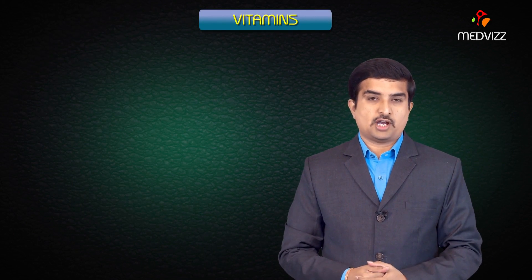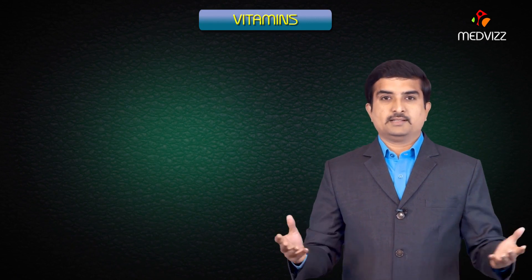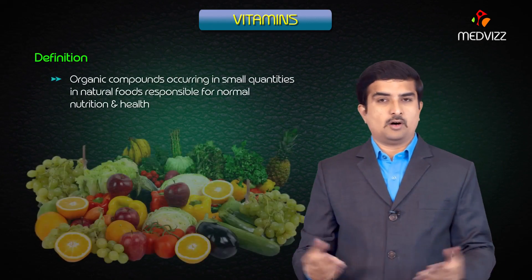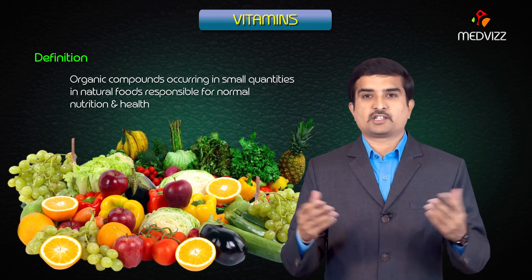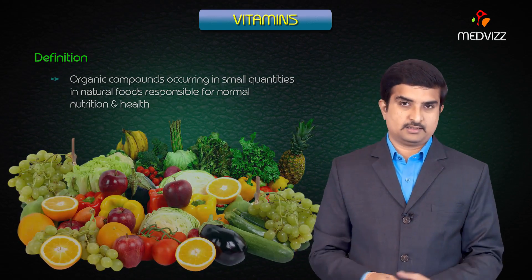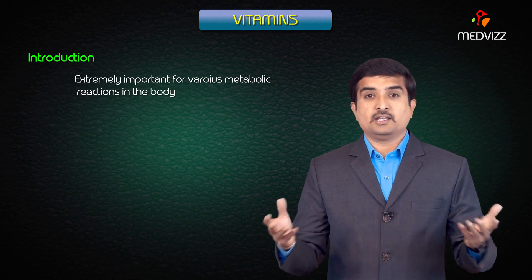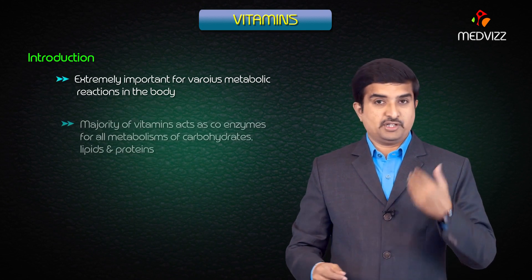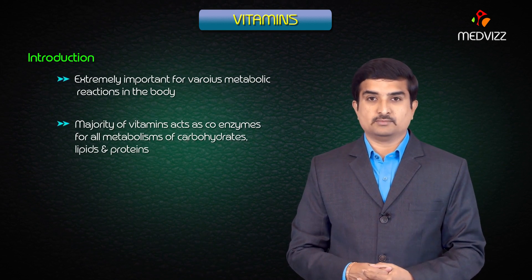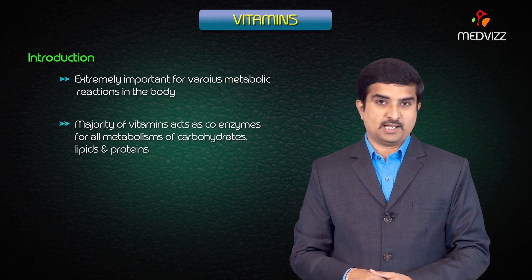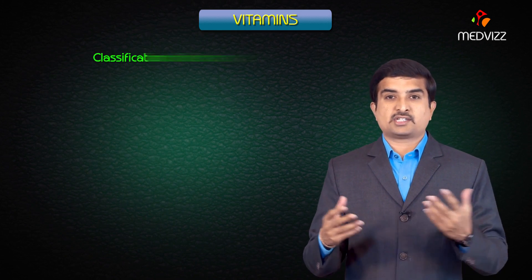Let us begin a new chapter in medical biochemistry: vitamins. Vitamins have been defined as organic compounds occurring in small quantities in natural foods, which are responsible for normal nutrition and health. These vitamins are also extremely important for various metabolic reactions in the body, and the majority of vitamins act as coenzymes for all types of metabolism — carbohydrates, lipids, as well as proteins.